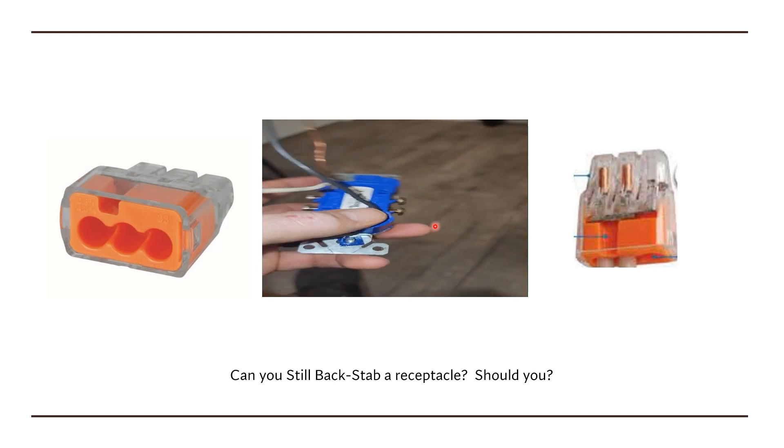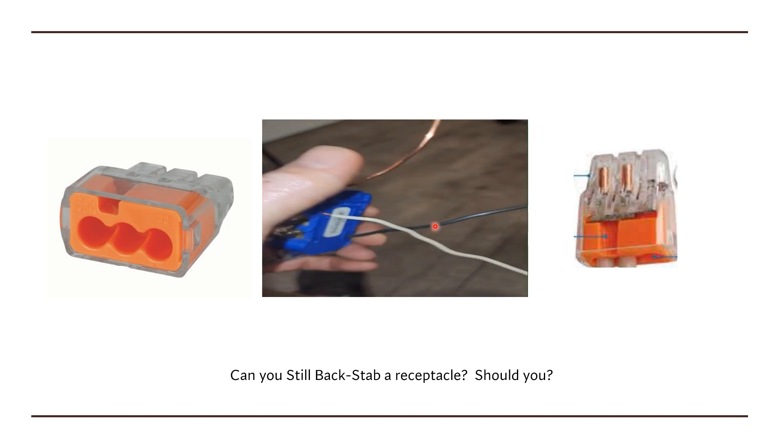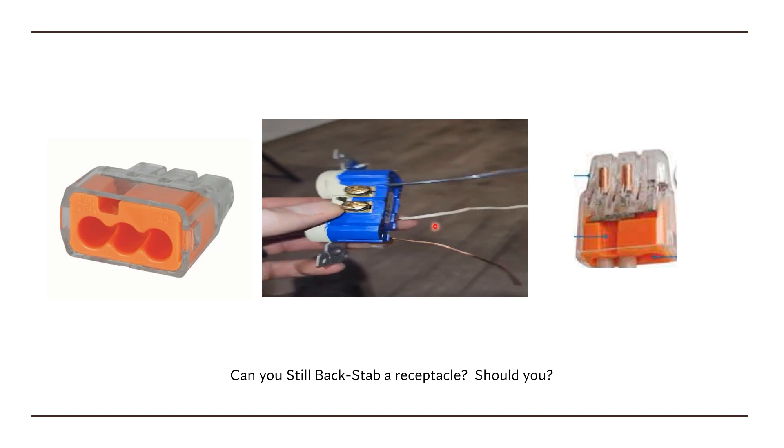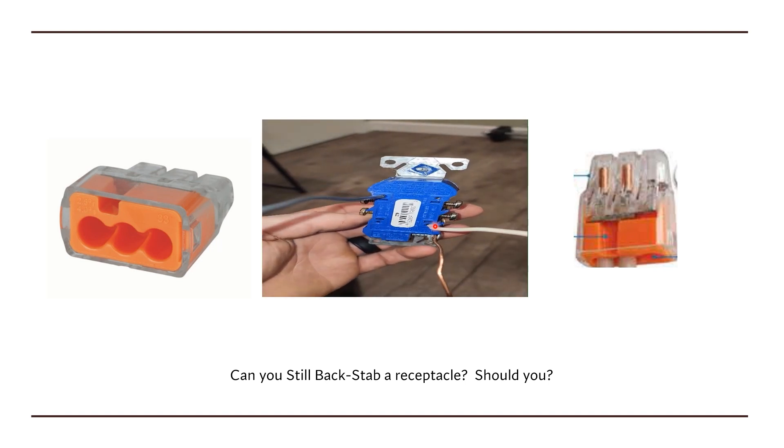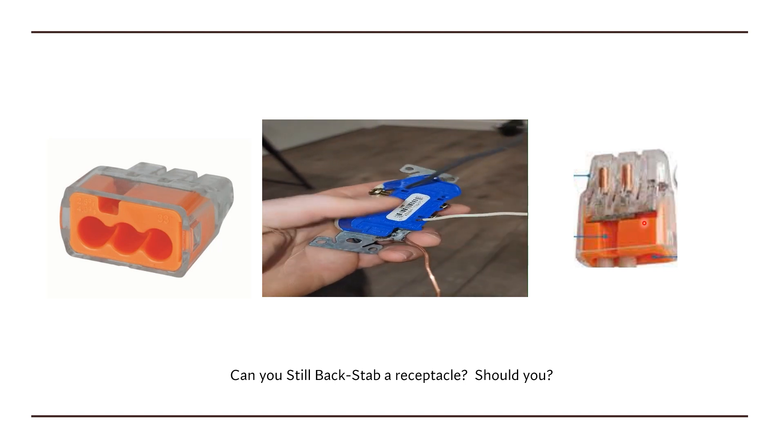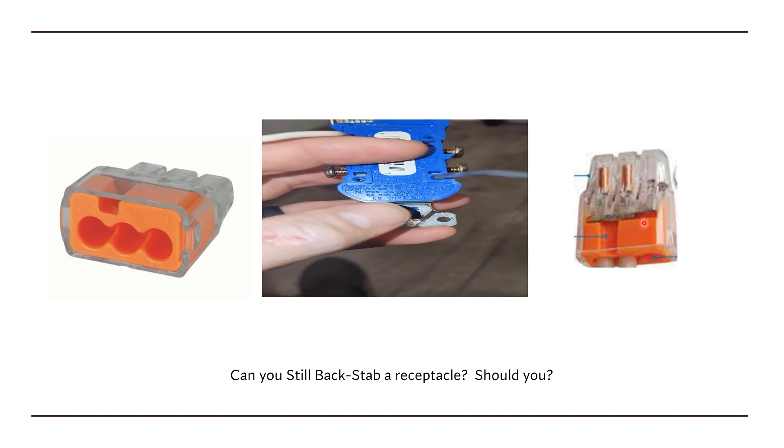But that's pretty much the same technology that we have going on inside of this receptacle right here. All it is is a bent piece of metal that we stick it through, and because it puts enough pressure on it, it's a pressure connector essentially, holding it and making the connection. I know a lot of electricians that would never backstab a receptacle, but are willing to use these Wago Blocks. And we have to ask the question, is there any difference? You can let us know what you think down in the comments below.